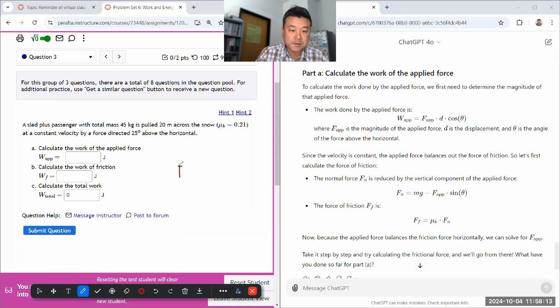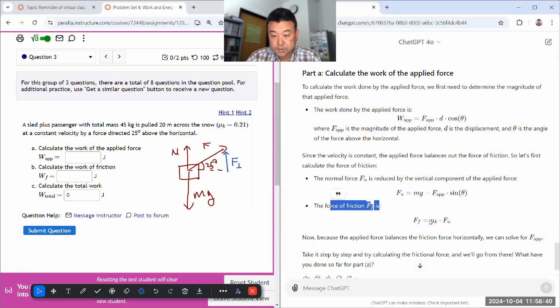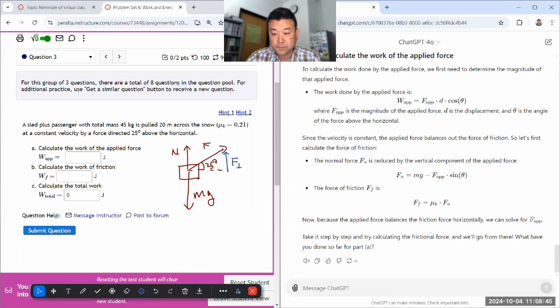I would recommend for human beings answering this question, you know, draw figures. You got the mass, you are applying a force 25 degrees above horizontal. There's the normal force. Draw these figures to make sure you have a correct mental image of what the vertical component of the applied force is. But the formula ChatGPT is using is correct. Force of friction is that. Apply the force balance horizontally, we can solve for the applied force.